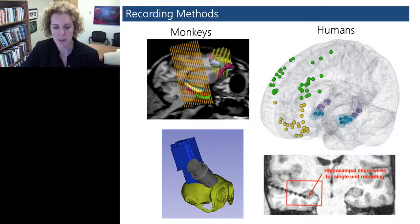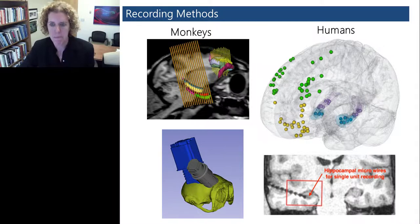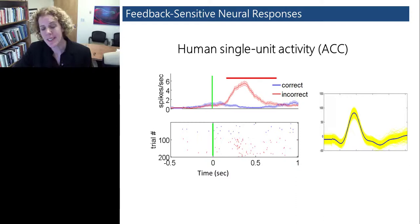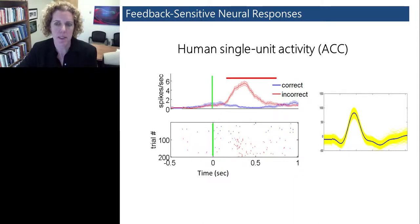What's exciting is in these experiments, we can record single unit activity as well as the local field potential from homologous brain regions in monkeys and humans while they're performing exactly the same task. This slide shows some of our preliminary data. This is the activity of a single unit recorded from the anterior cingulate cortex of a human patient. This is an interesting neuron which showed feedback sensitive neural response. In this figure, the green line at time zero represents the time of feedback to the patient on each trial. This neuron showed an increased firing rate for incorrect trials shown in red compared to correct trials, which are shown in blue. The figure on the right just shows the waveform recorded from the single neuron.